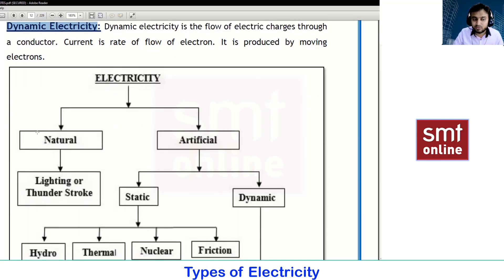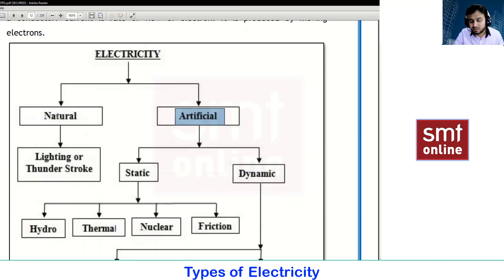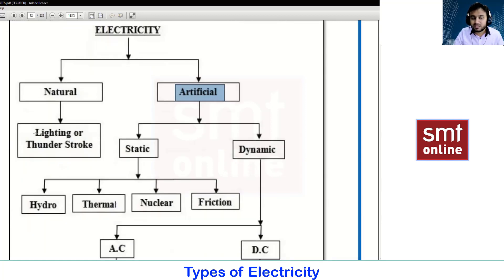Electricity is classified into natural and artificial. What is meant by natural? The name itself indicates - the energy which we are getting in natural form like lightning strikes or thunder strokes, especially in bad rainy weather conditions. Artificial means which we are generating or developing.